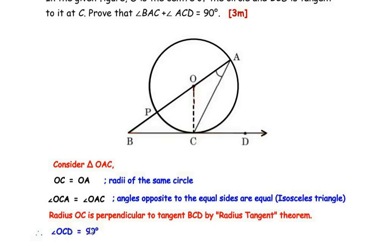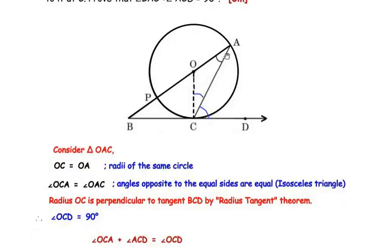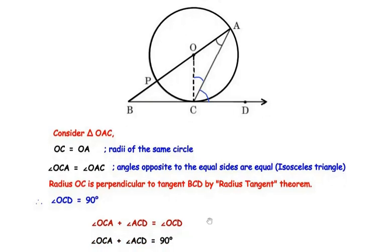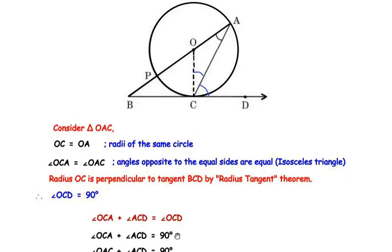We can see that angle OCD is made up of two angles: angle OCA and angle ACD. So angle OCA plus angle ACD equals angle OCD, and since angle OCD is 90 degrees, we have angle OCA plus angle ACD is equal to 90 degrees.